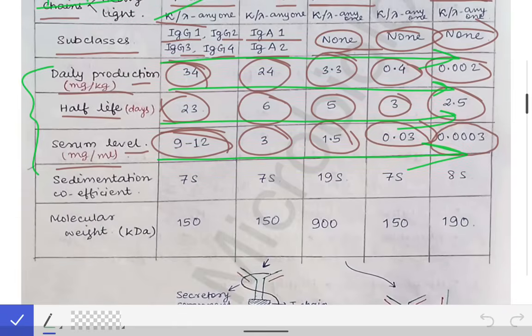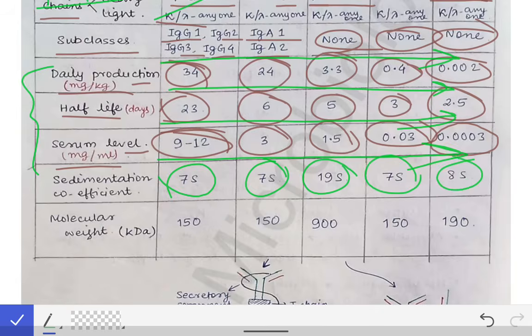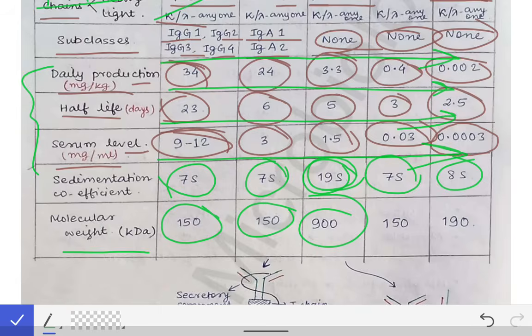Now come to the sedimentation coefficient. For IgG it is 7S, for IgA it is 7S, for IgM it is 19S — because it has a pentameric form — for IgD it is 7S, and for IgE it is 8S. Molecular weight in kilodaltons: IgG is 150, IgA is 150, IgM is 900, IgD is 150, and IgE is 190 kilodaltons.